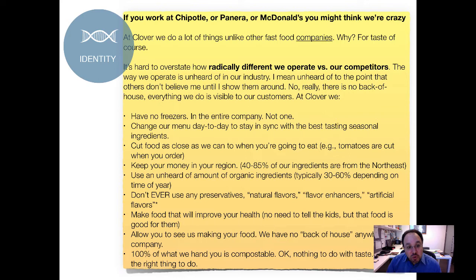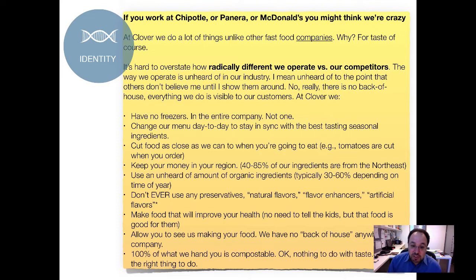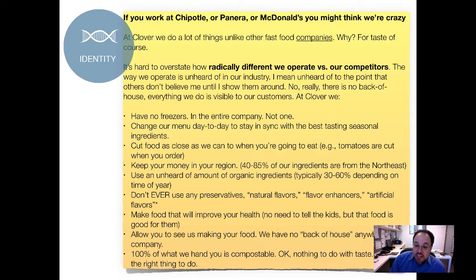Clover's own discussion about why they're different from other fast food companies is an interesting read. One thing it impacts is technology: trying to be fresh means you have no freezers. A freezer is a technology that every single other restaurant chooses, but Clover doesn't. That means everything has to be fresh — you have no choice. They organize around that, showing people that tomatoes are cut just before eating. They commit to keeping money in the region because there are no freezers — it has to be kept locally. They use a lot of organic ingredients, no preservatives, no natural flavors.